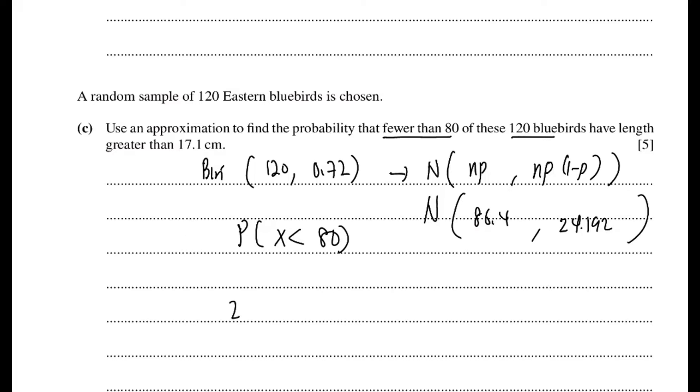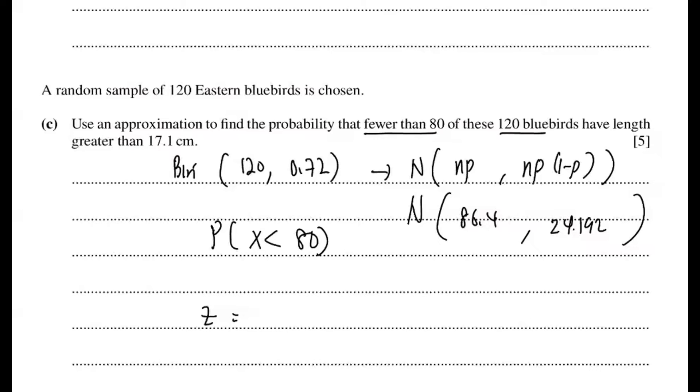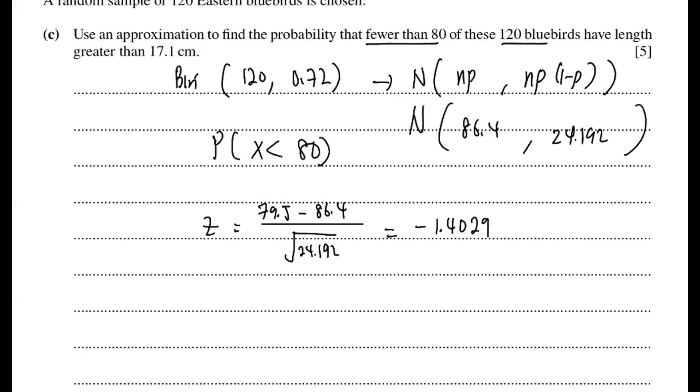So don't forget to find your z. So what's your z? So your z will be less than 80. So you must do the continuity correction. Less than 80 will be 79.5. So 79.5 minus 86.4 divided by square root of 24.192. Get a z first, then look for the probability.